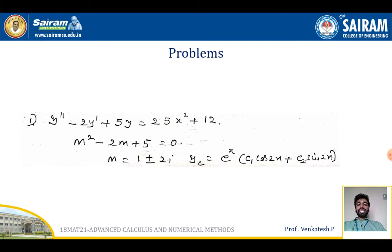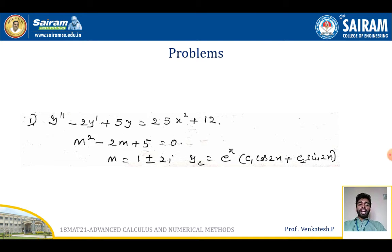We form the auxiliary equation m² - 2m + 5 = 0. On solving, the roots are m = 1 ± 2i. Since the roots are complex, the complementary function is e^x(c1·cos2x + c2·sin2x).